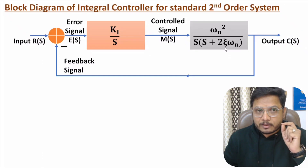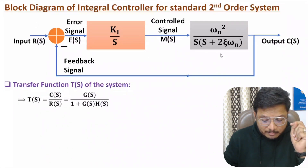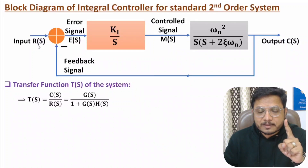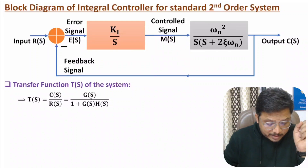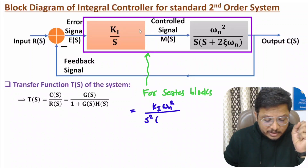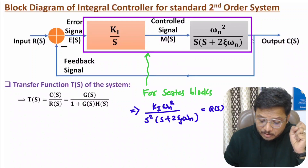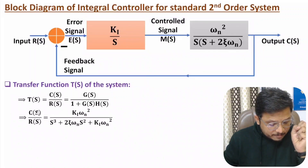The transfer function of the system is the output C(s) divided by input R(s). For a negative feedback system, the transfer function is G(s) divided by (1 plus G(s)H(s)), where G(s) equals Ki times omega_n squared divided by s squared times (s plus 2 zeta omega_n), and H(s) equals unity.